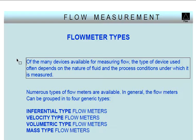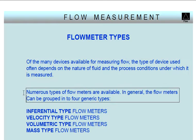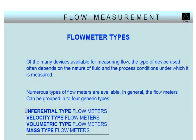Of the many devices available for measuring flow, the type of device used often depends on the nature of the fluid and the process conditions under which it is measured. Numerous types of flow meters are available. In general, flow meters can be grouped into four generic types: inferential type, velocity type, volumetric type, and mass type flow meters.